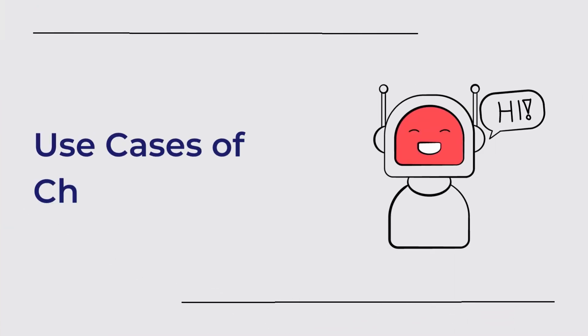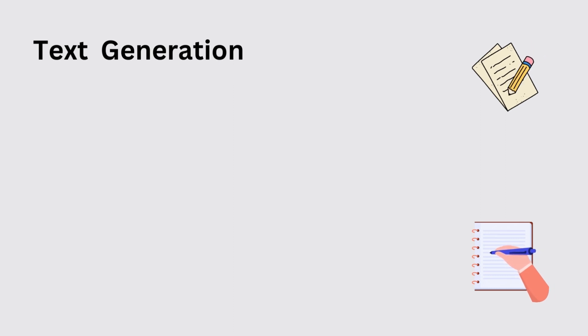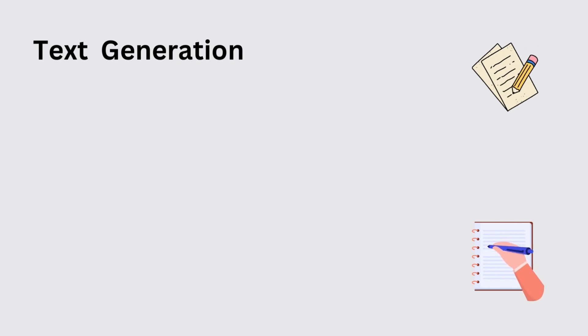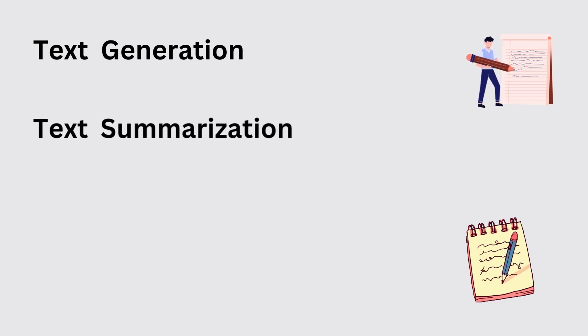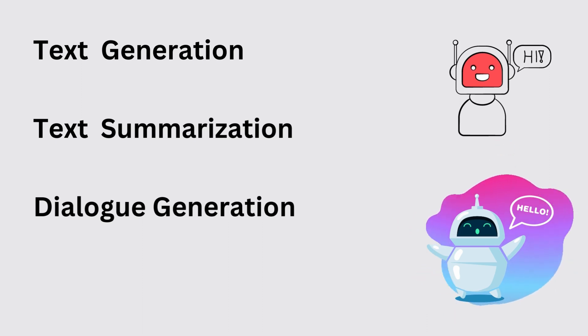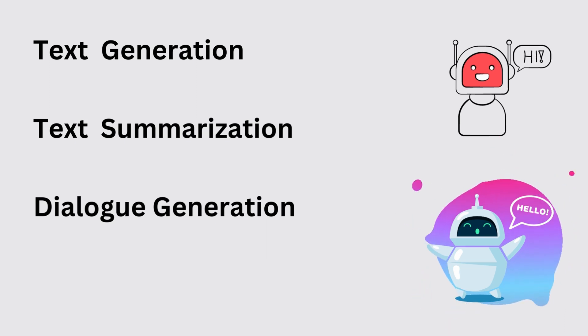Now let's look at the use cases of ChatGPT. ChatGPT is already being used in a wide variety of natural language processing tasks to make our lives easier. Some common use cases include text generation, where ChatGPT is used to generate human-like text for applications like creative writing and writing responses. Text summarization, where the AI model can summarize long articles into shorter versions by retaining key points. And dialogue generation, where the AI model generates contextually relevant responses in a chatbot or virtual assistant, much like how humans would respond.